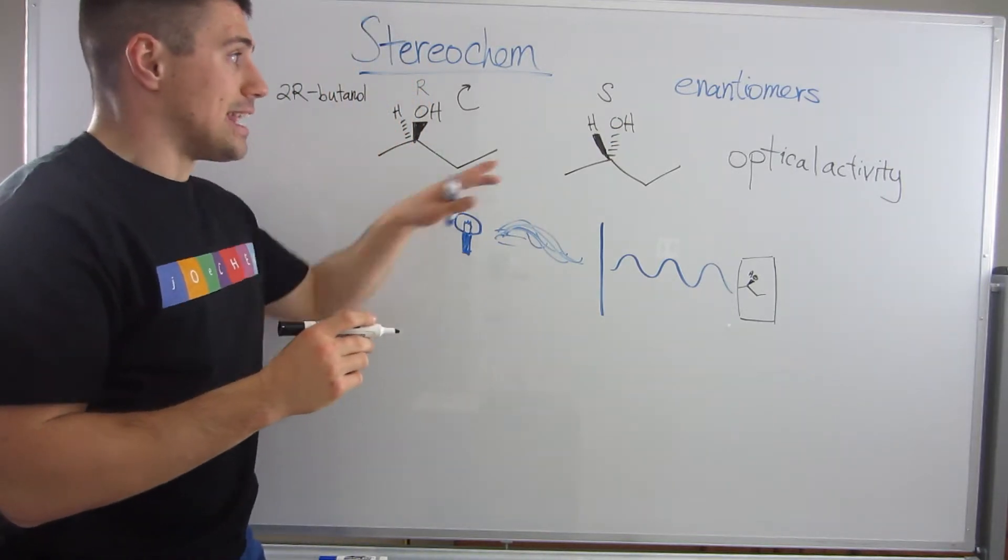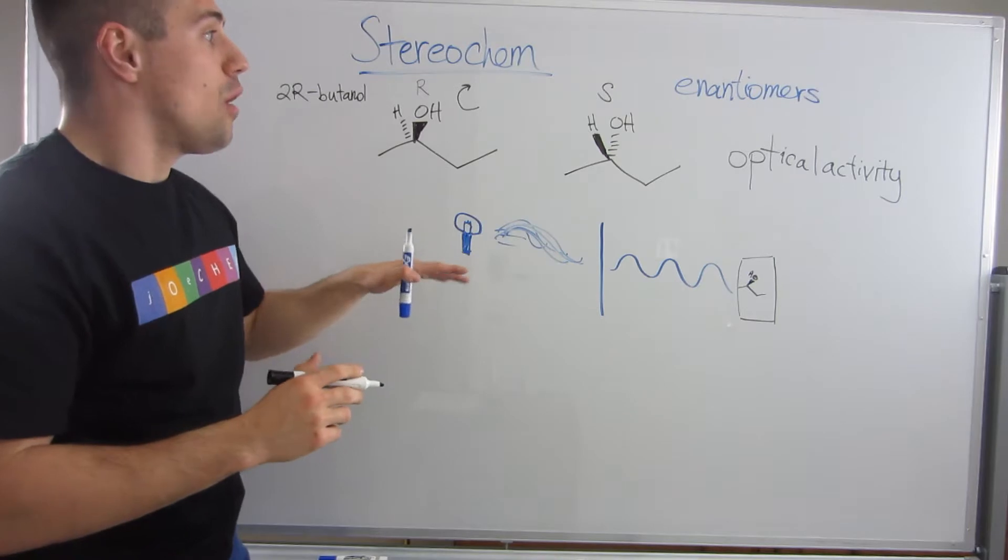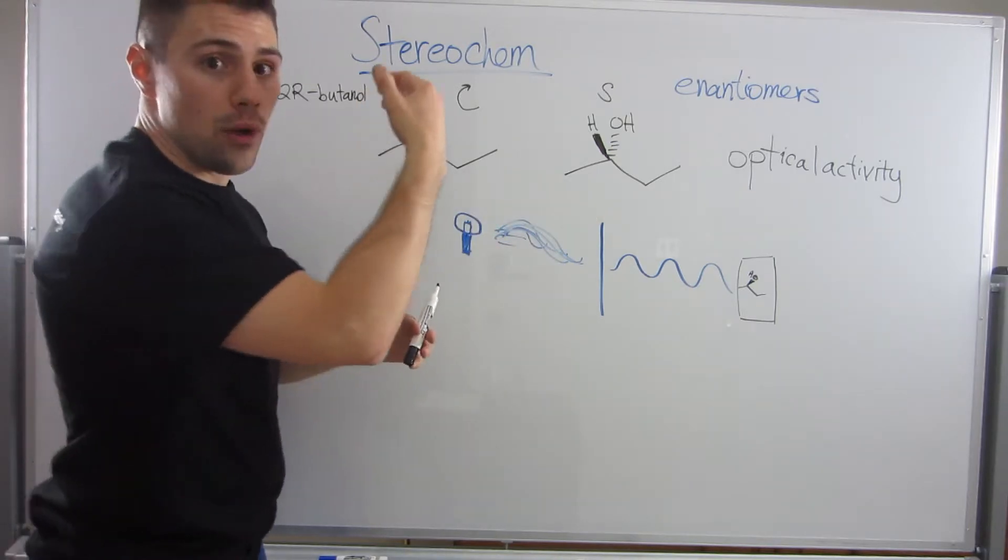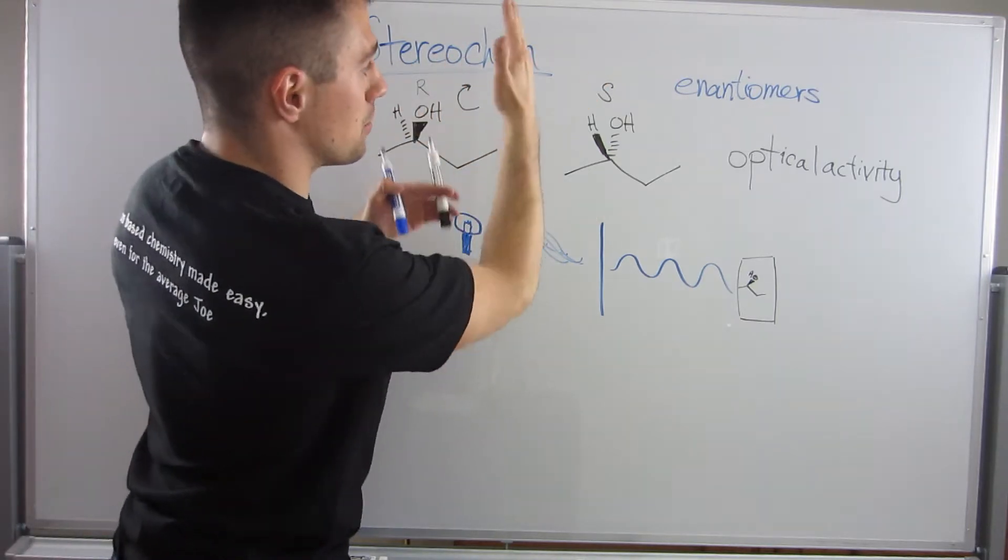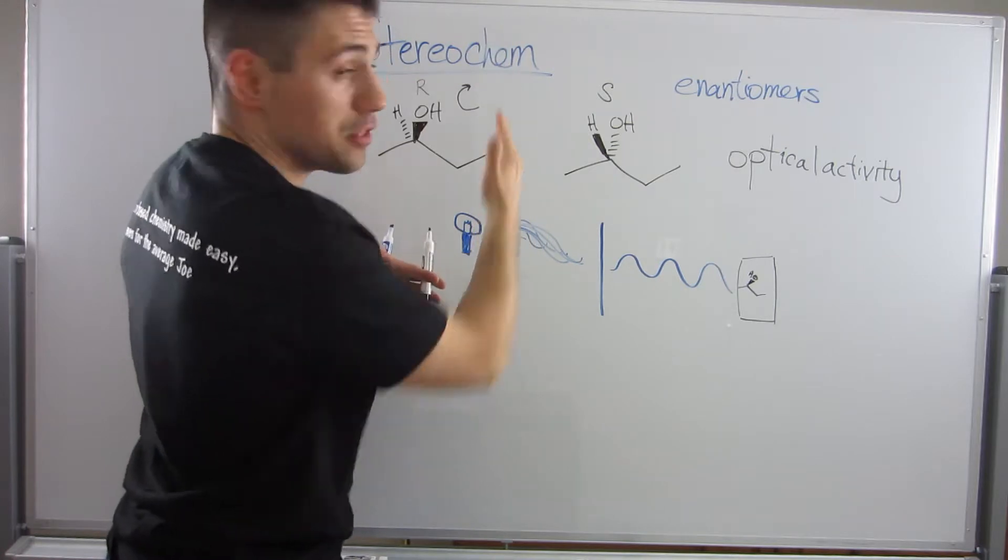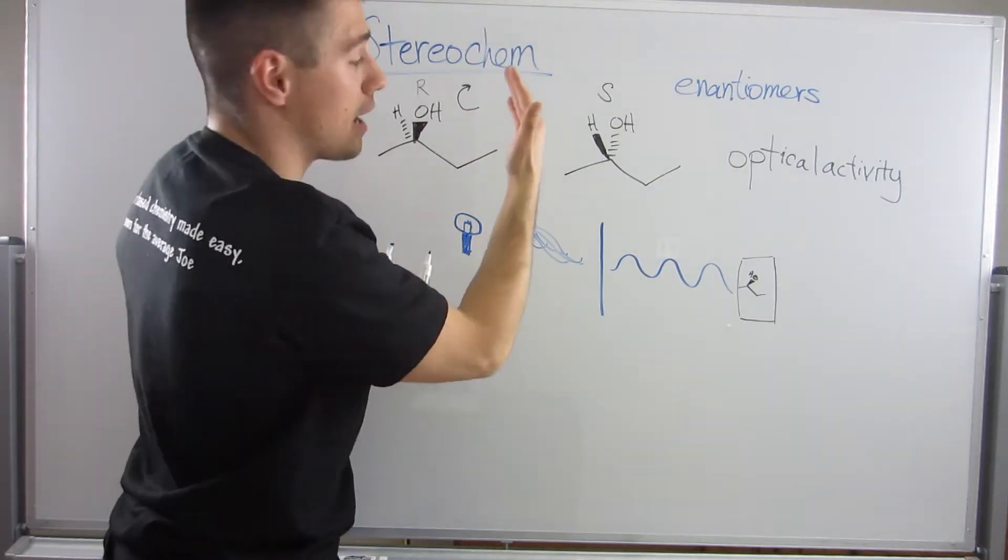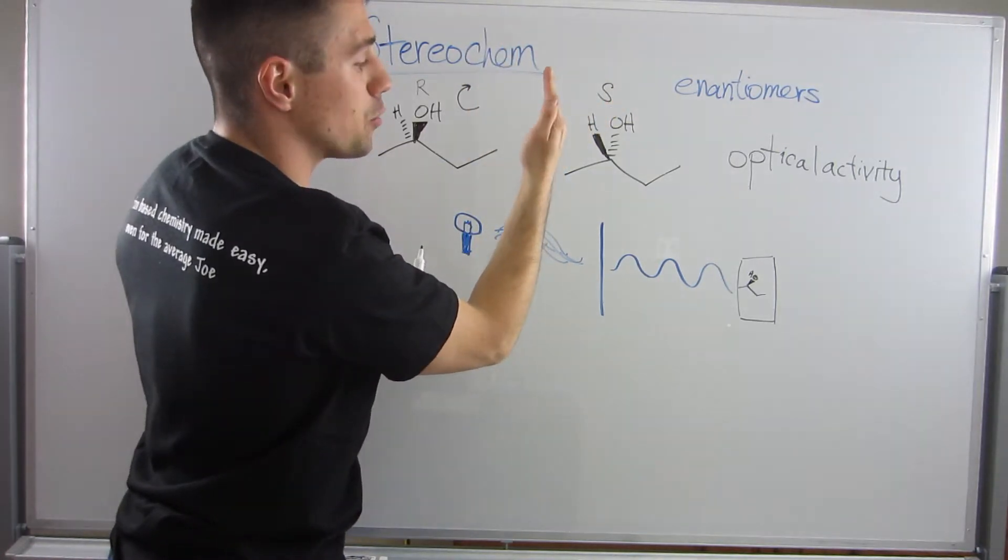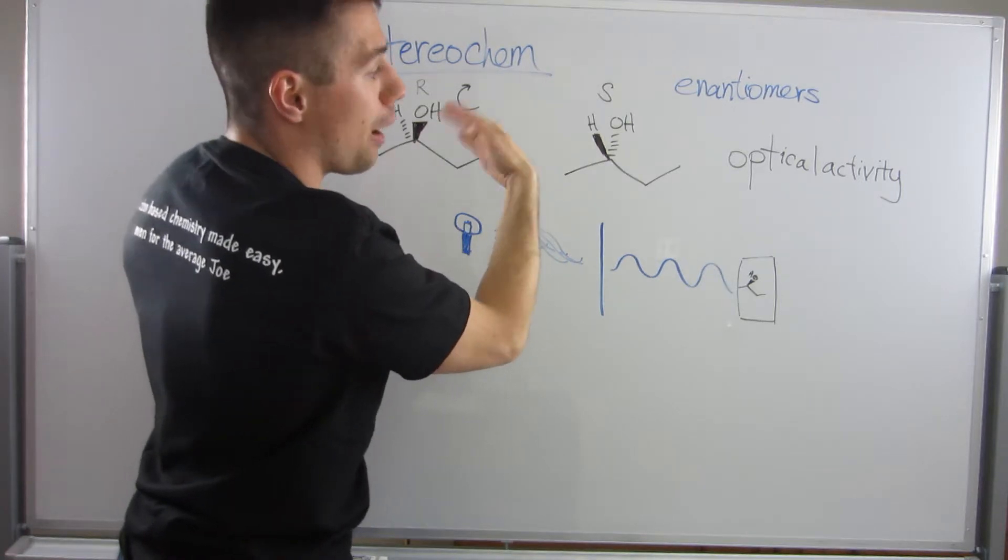So enantiomers, the way they differ is that one of them will bend the light one way, a certain number of degrees from the normal, like a straight up and down line. The other enantiomer will bend it equally, but opposite the other way.